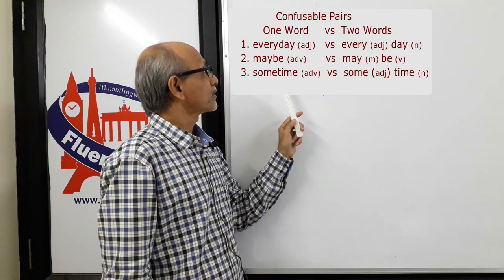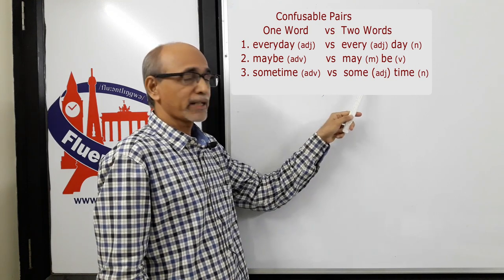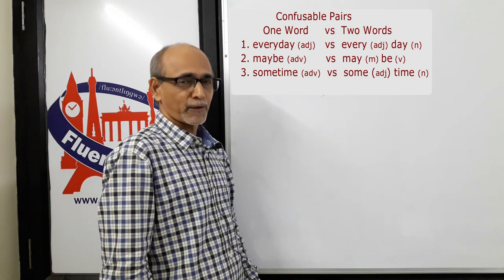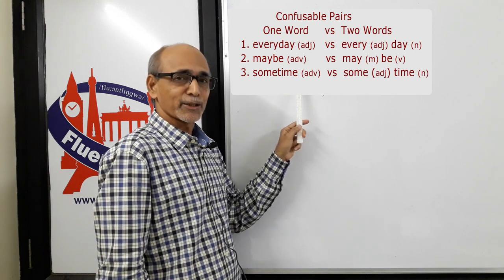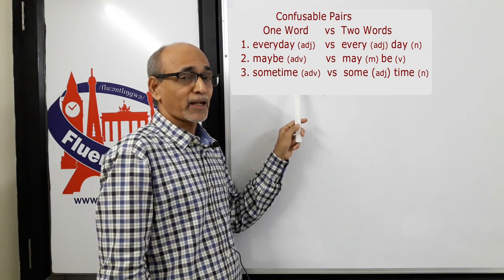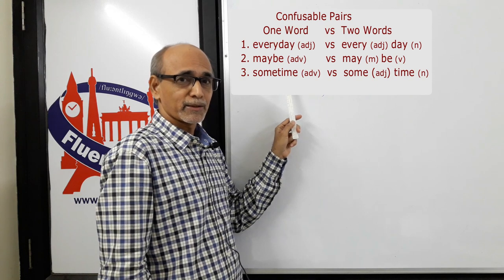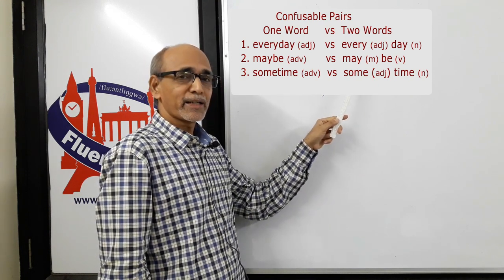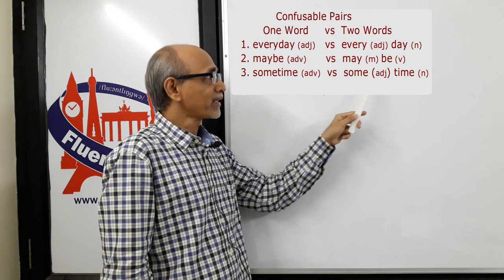The first pair is 'everyday' as one word and 'every day' as two words. Now they are widely different. When you say 'everyday' as one word, it is an adjective. For example, you say 'that's an everyday problem.' Problem is a noun and before that you are using the word 'everyday' as an adjective. When you say 'every day' as two words, 'every' functions as an adjective and 'day' is a noun.